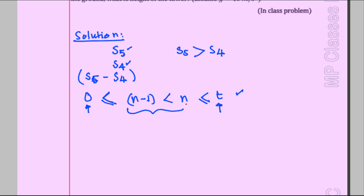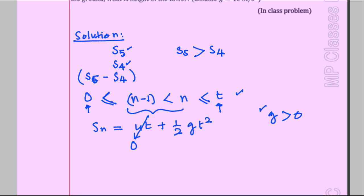Let us find the distance traveled in n seconds. Using S = ut + ½gt², where g is gravitational acceleration and is positive because the stone falls in the direction of motion. Since u = 0, the first term vanishes. Substituting t = n, we get Sn = ½gn². I call this equation one.